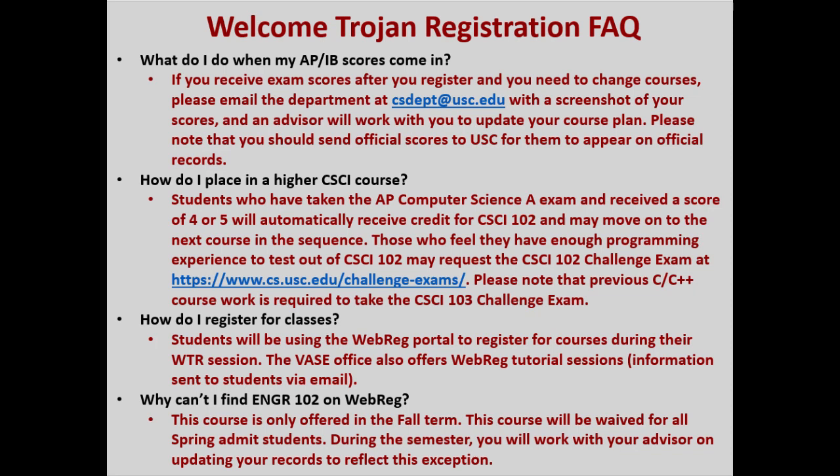Now that we have introduced you to the computer science department, the curriculum, and some campus resources, we would like to address your upcoming Trojan registration. Please note that these are some frequently asked questions we receive from students. We know that not all AP or IB scores may be in our system yet — once you receive these scores, if they change your placement, you may send us screenshots at our department email and an advisor will help you update your course plan. To place into a higher CSCI course, you must have AP credit for AP Computer Science A, or you must have taken and passed the CSCI 102 challenge exam.